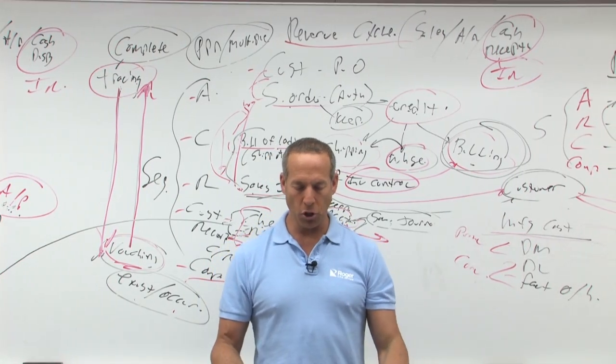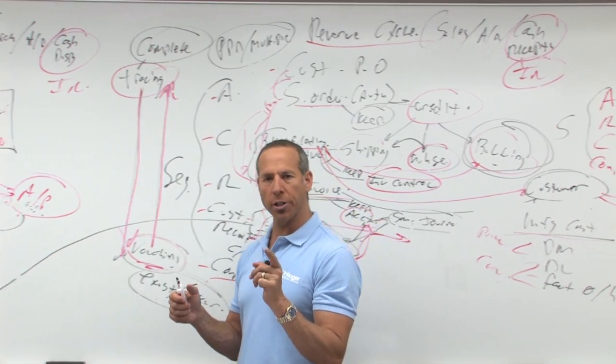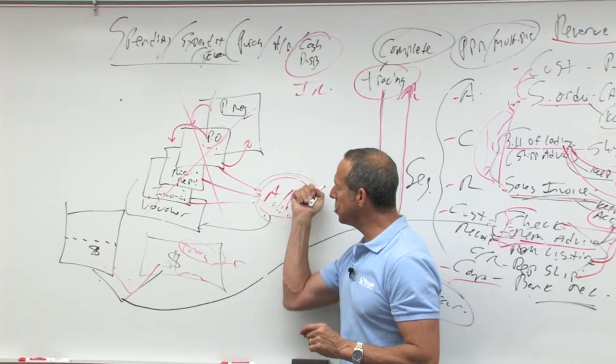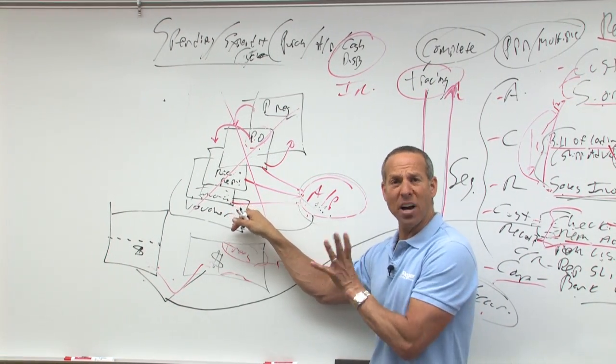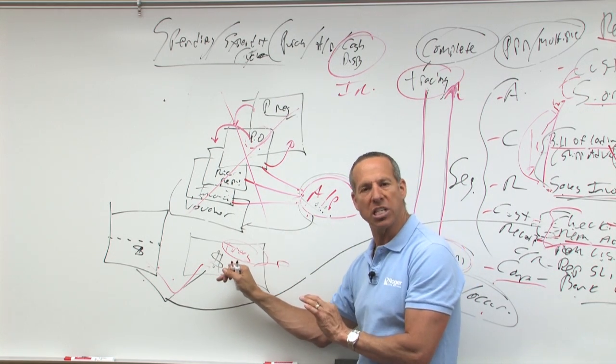Number 12, for effective internal control, the accounts payable department generally should what? What should payables do? They get this, they get this, they get this, they authorize the payment. They may even prepare the check and then give it to the treasurer who signs the check.